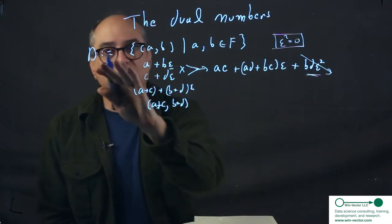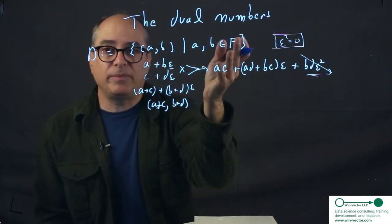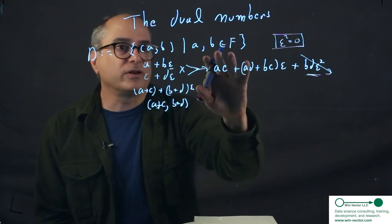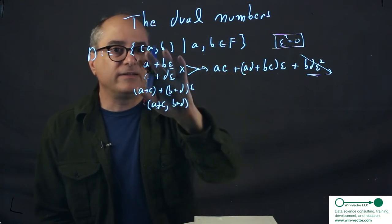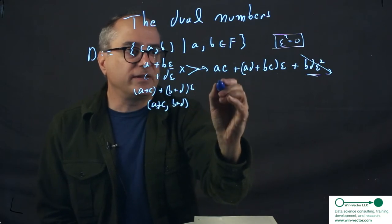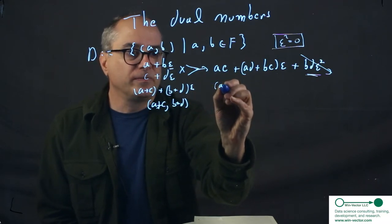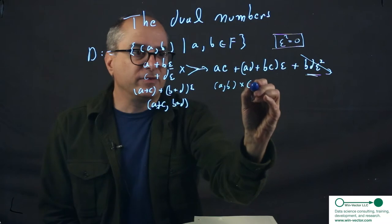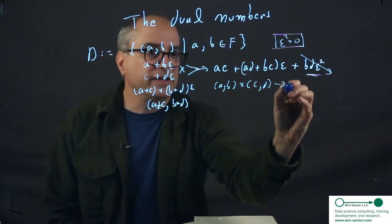So really, the dual numbers are a vector space over our base field, be it the real numbers or the floating point numbers. And it has a multiplication rule. And the multiplication rule is that this tuple times this tuple is this tuple.